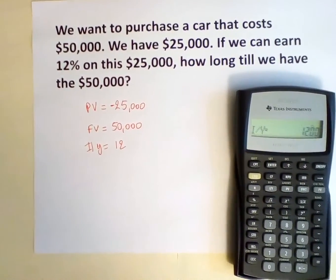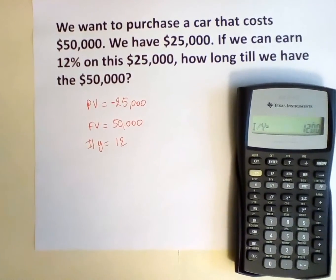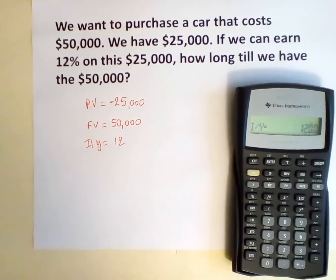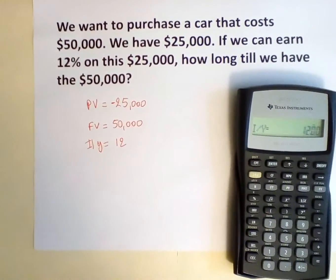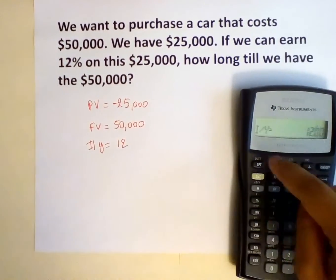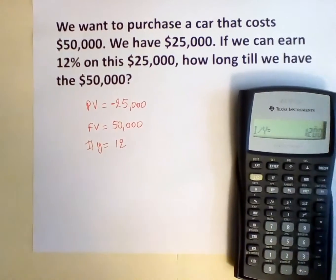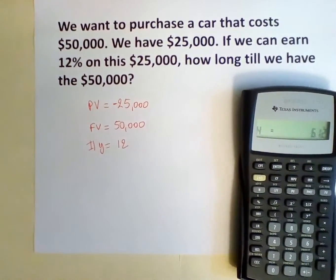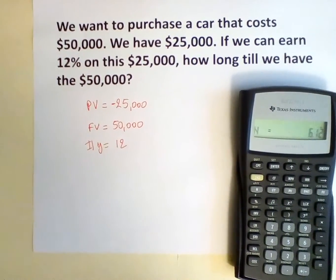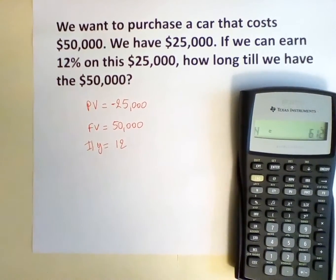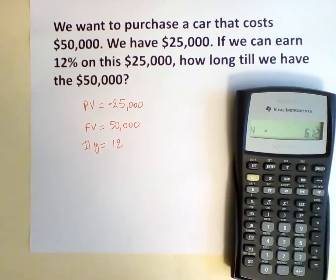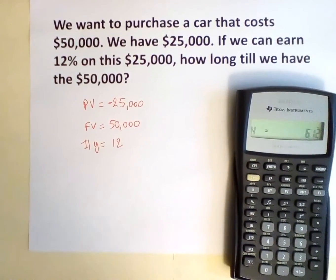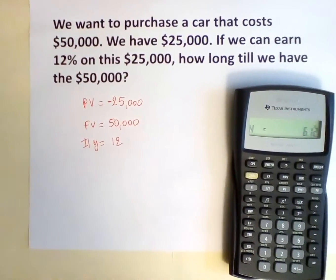Now we need to know how long it will take us to reach the $50,000 if we were to take that $25,000 and invest it at 12%. So we hit compute, CPT, N, and the result is 6.12. So it will take us a little over six years to grow our money from $25,000 to $50,000 if we invest it at 12%. Thank you very much.